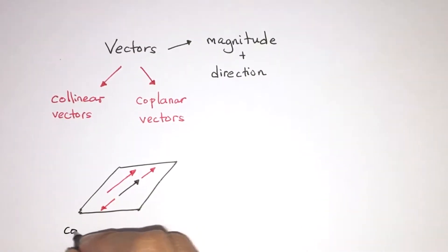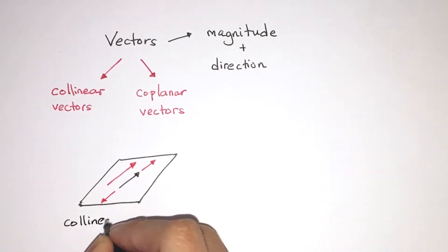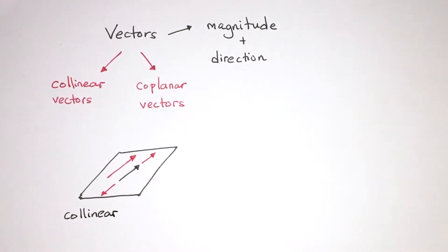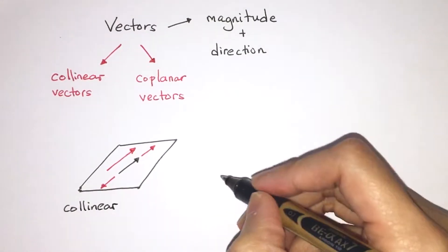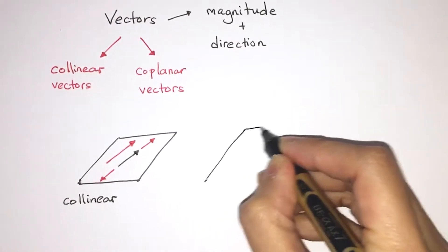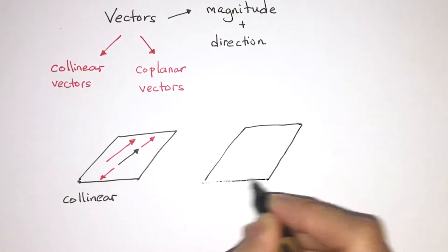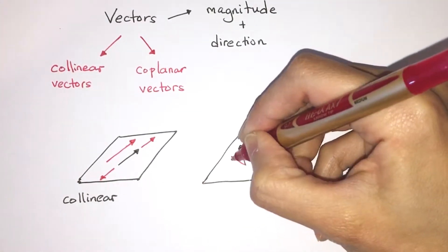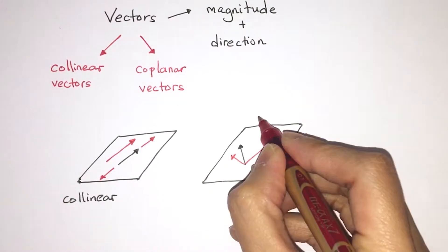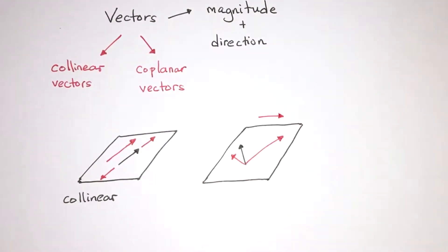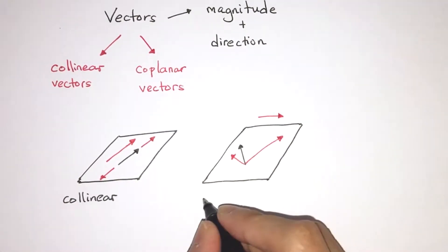I'm also going to draw three more arrows in red. All three of these vectors represented by these red arrows are considered collinear because they're parallel to the same line. And on this other plane that I've drawn, you can see that these arrows are no longer collinear because they're not parallel to the same line. They're only parallel to the same plane.